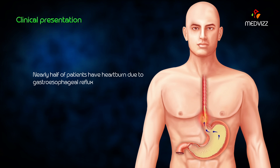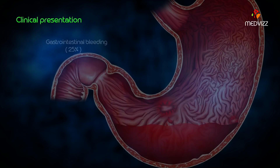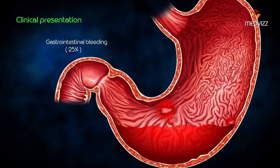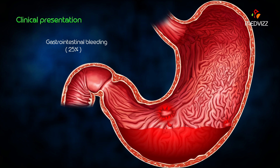Nearly half of patients have heartburn due to gastroesophageal reflux disease. Other symptoms include weight loss, mainly due to pancreatic enzyme deficiency, seen in approximately 15 to 20% of cases, and gastrointestinal bleeding, especially from ulcers, in 25% of cases.